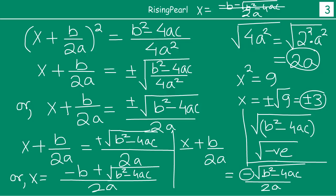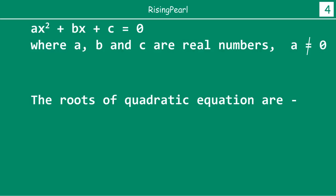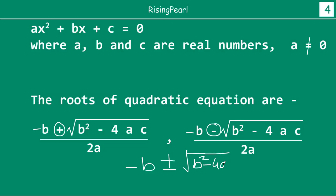Let's write this properly. If Ax² + Bx + C is a quadratic equation, then the roots of this quadratic equation are: x = (−B + √(B² − 4AC)) / 2A and x = (−B − √(B² − 4AC)) / 2A. We can also combine them and write them together as x = (−B ± √(B² − 4AC)) / 2A, where the plus gives one root and the minus gives the other.